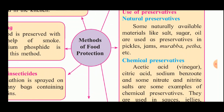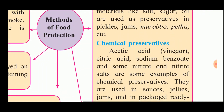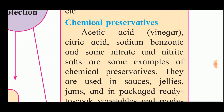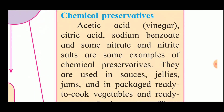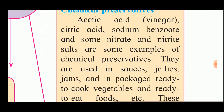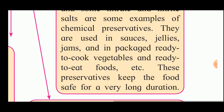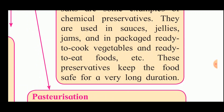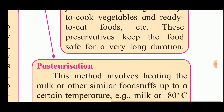Chemical preservatives include acetic acid, vinegar, citric acid, sodium benzoate, and some nitrate and nitrite salts. They are used in sauces, jellies, jams, and in packaged ready-to-cook vegetables and ready-to-eat foods. These preservatives keep the food safe for a very long duration.